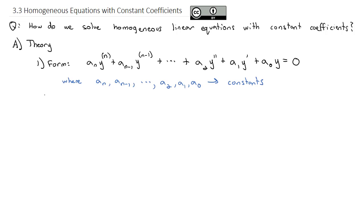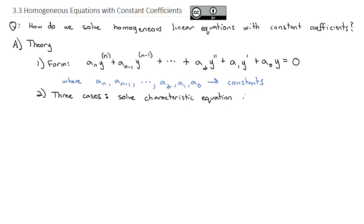If we've got a homogeneous linear equation with constant coefficients like this, pretty much we have three cases we need to account for. We are going to solve the characteristic equation. Remember, the characteristic equation was the d-squared and d that we were replacing y double prime and y prime with. We are going to solve for the roots r_i, and there are three cases that can come out of this.